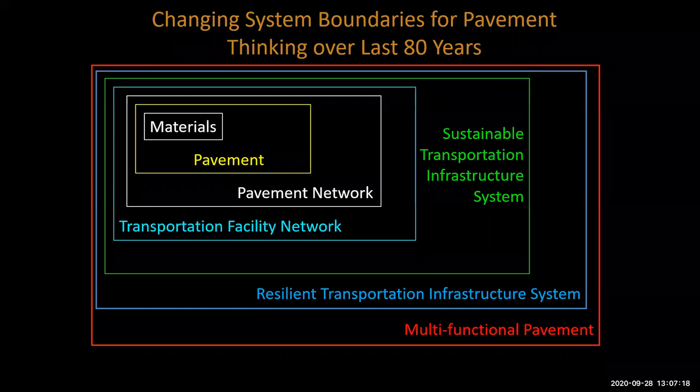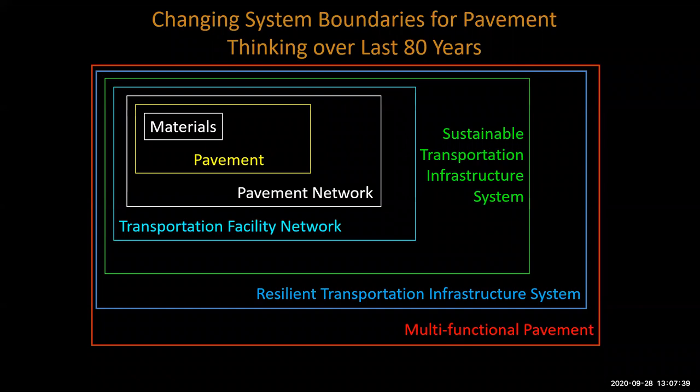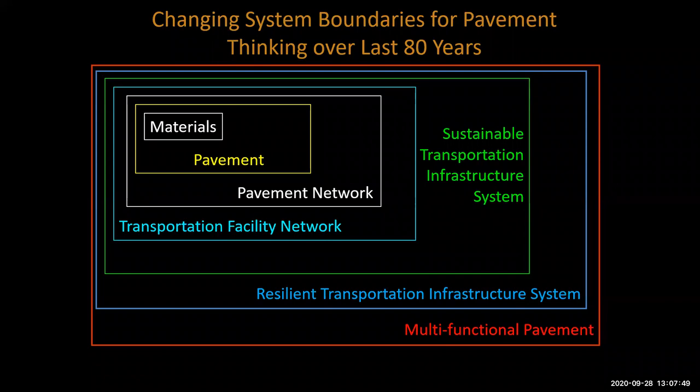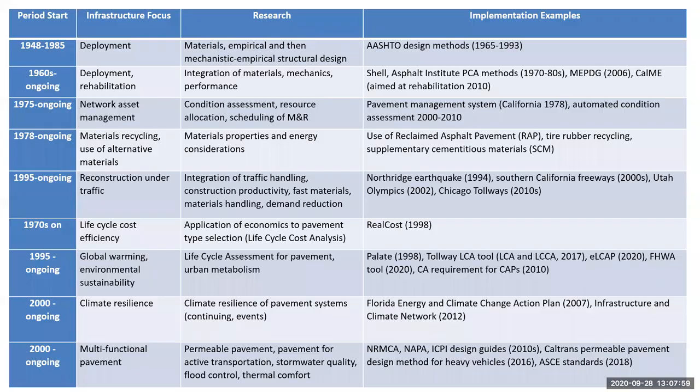Pavement network management is where China, Mexico, and countries that built out their networks starting around 1995–2000 have been focusing, and where India is beginning to transition. Then we began thinking about how this integrates with the rest of transportation. Then we had to think about environmental sustainability and much more about cost sustainability over the long haul. Now we're dealing with climate change and how to make infrastructure resilient. And the public, as they learn pavements can do more beyond carrying vehicles, is requiring us to think about multifunctional pavement.